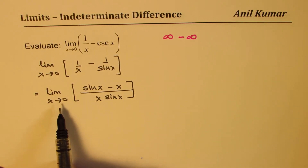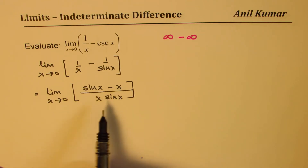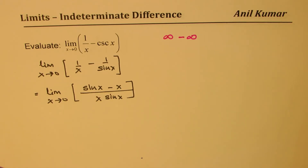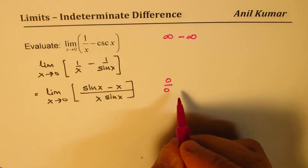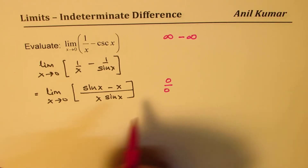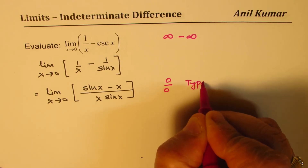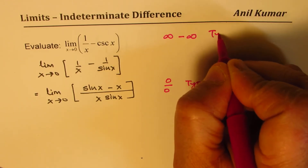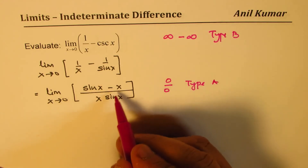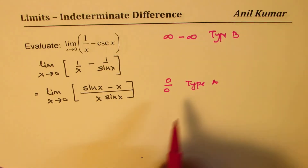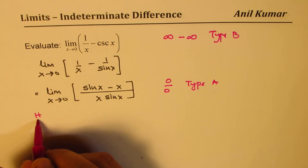Substituting 0 into this expression, we get 0 in the numerator and 0 in the denominator — so now we have a 0/0 indeterminate, which is type A. We have successfully written it as a ratio of two functions, so now we can apply L'Hopital's rule.